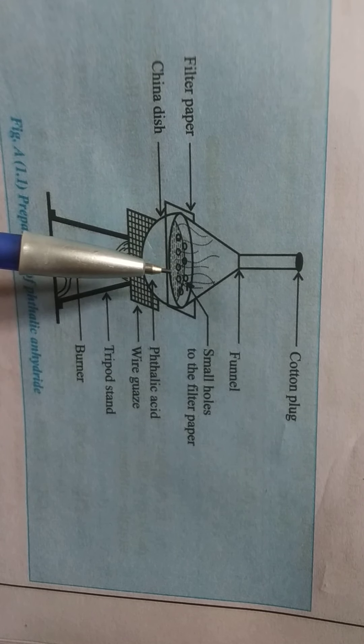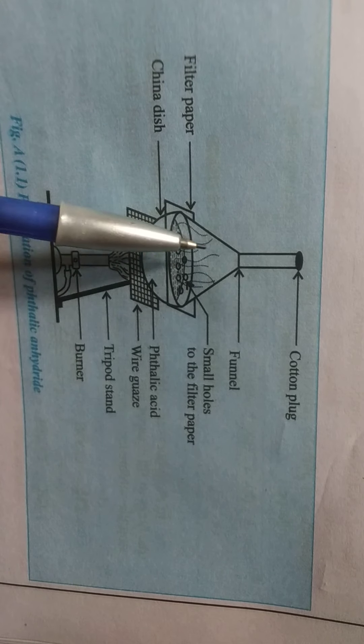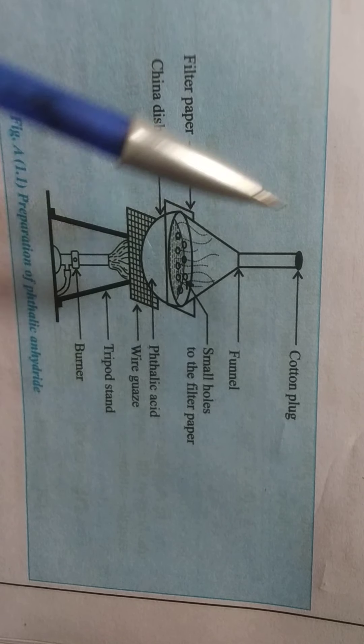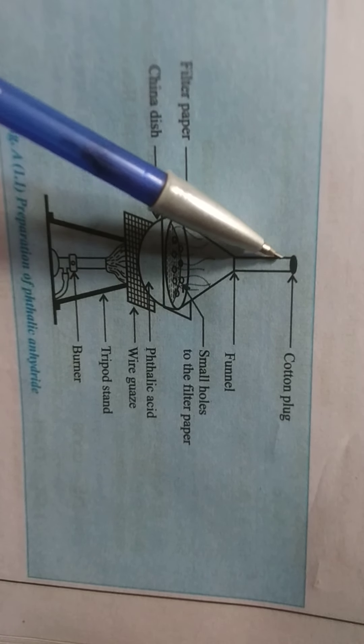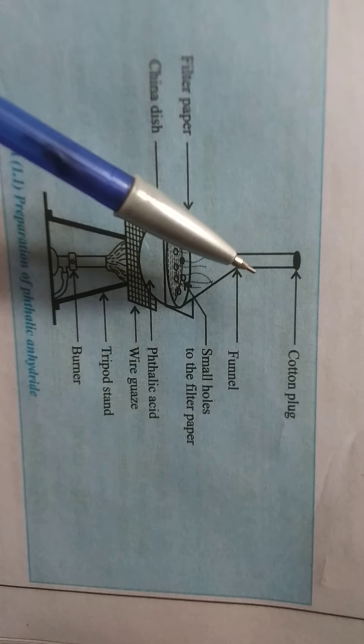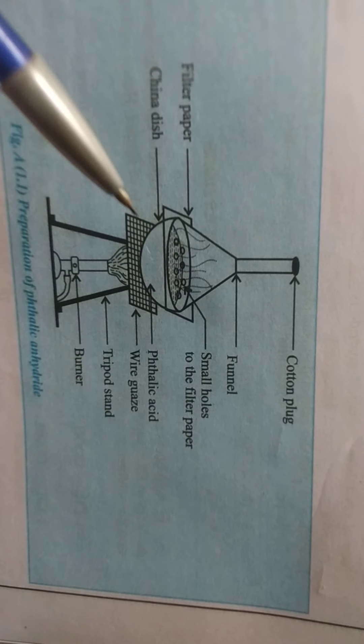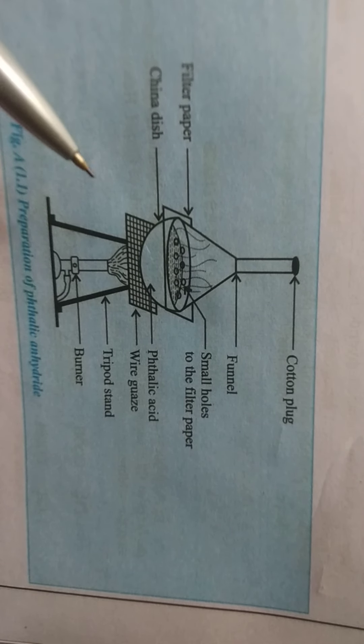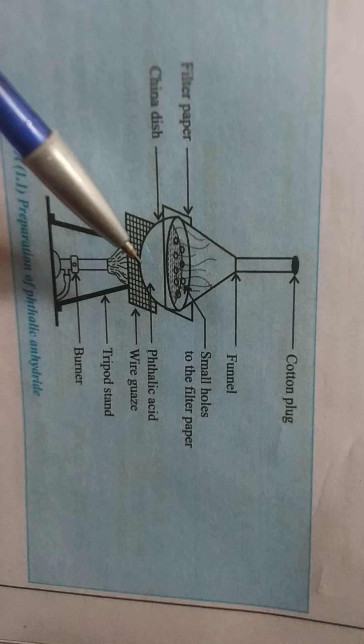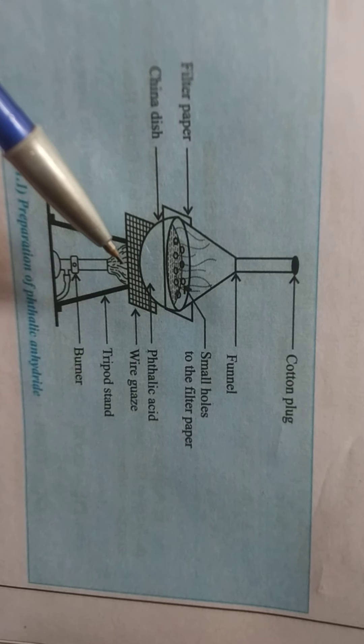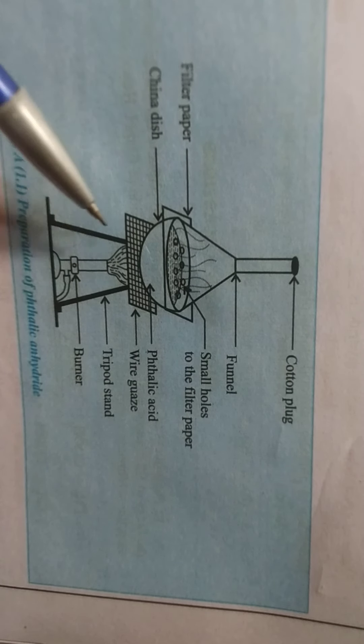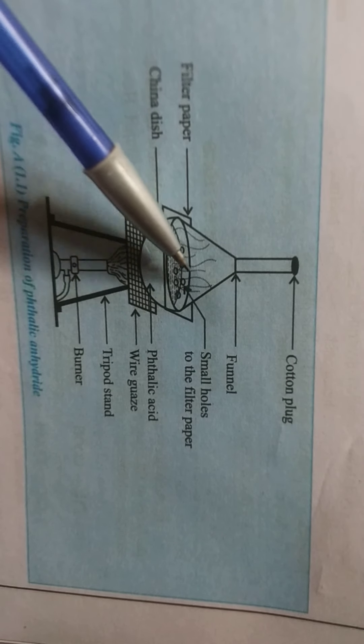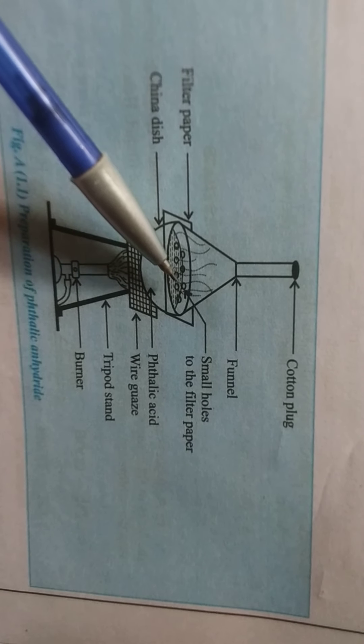Keep the inverted funnel on the filter paper and close the nozzle of funnel with cotton plug to prevent the loss of phthalic anhydride. Now we heat the china dish slowly and carefully using the sand bath. Stop heating and remove the funnel carefully from the inner side of the funnel to collect the crystals of phthalic anhydride.